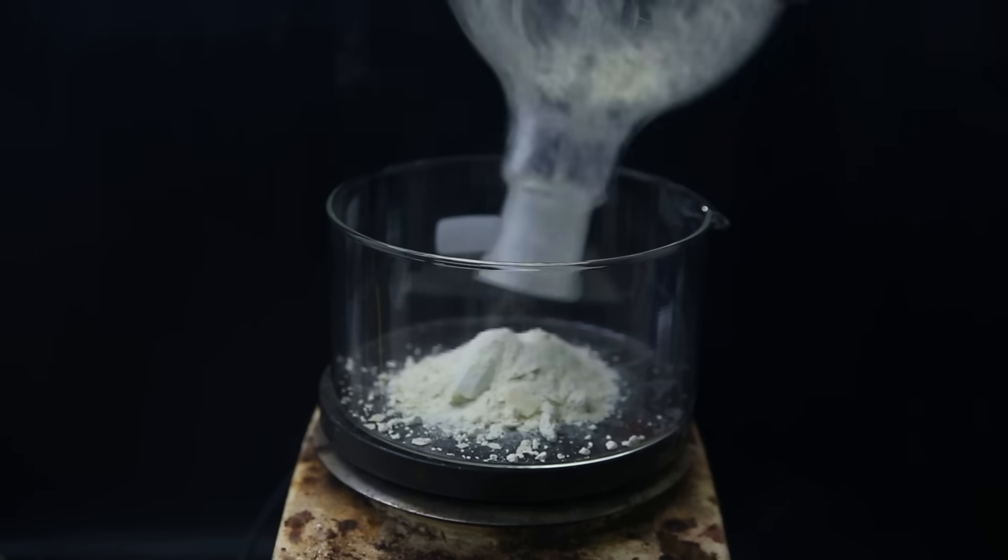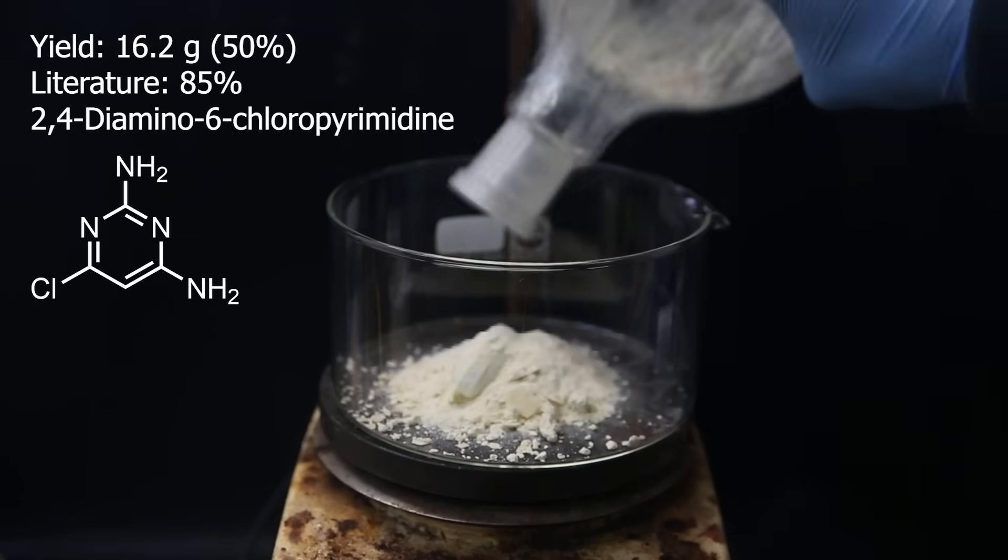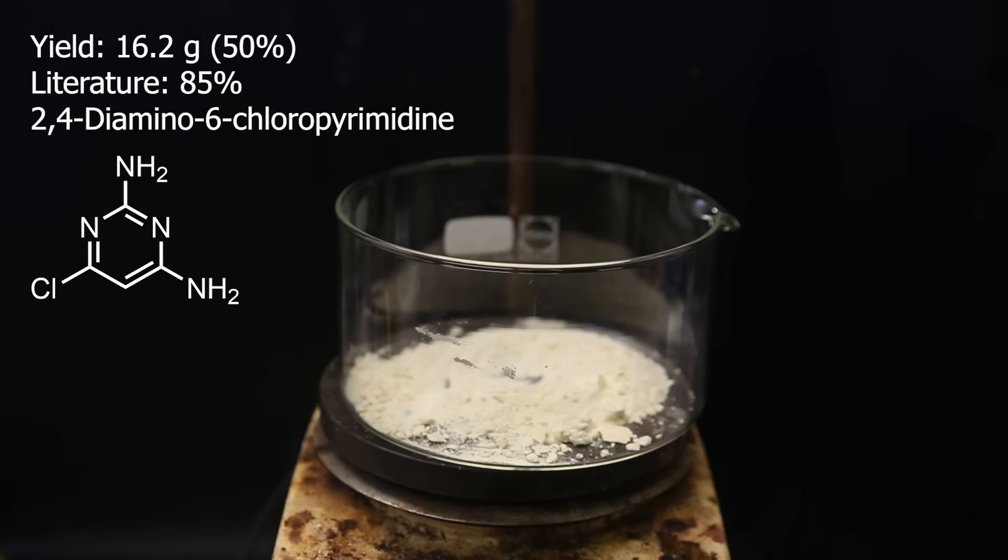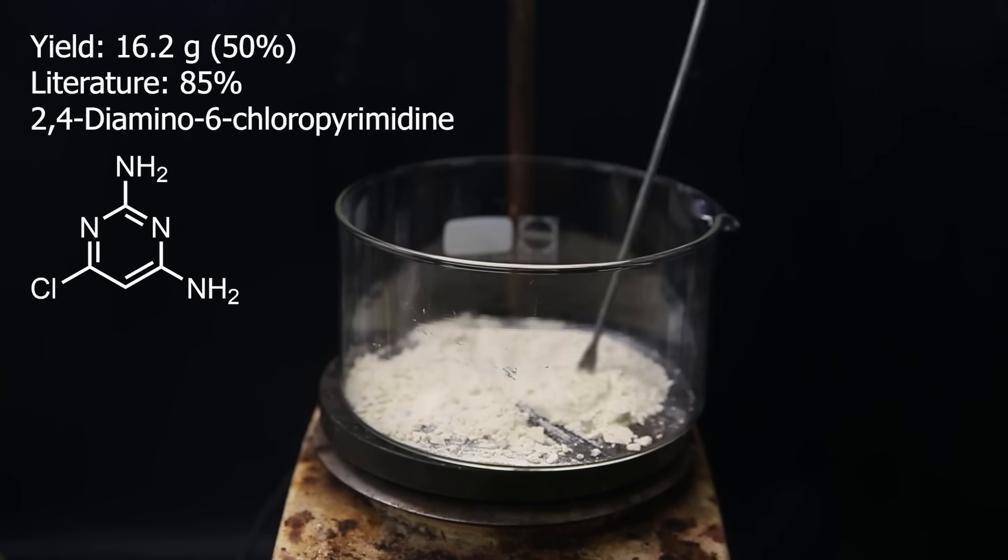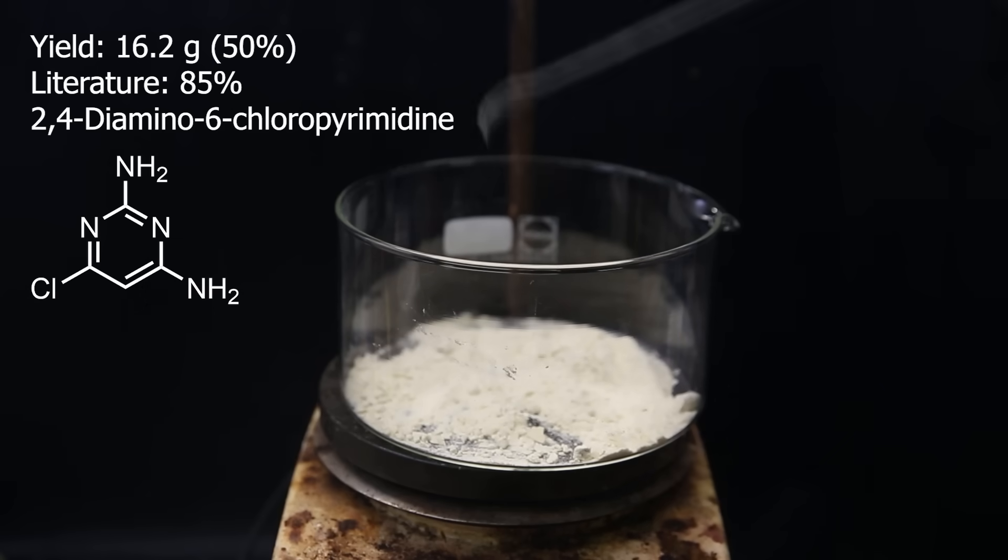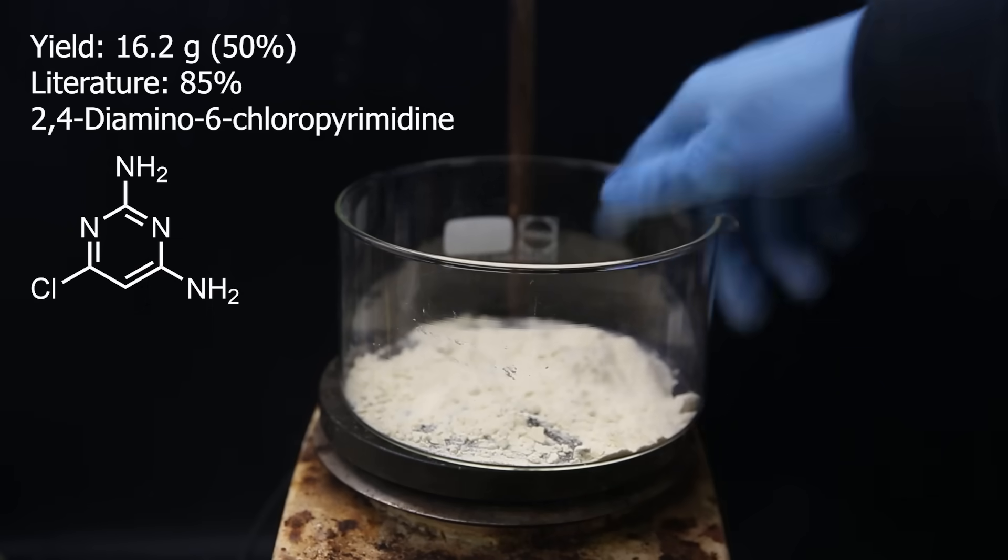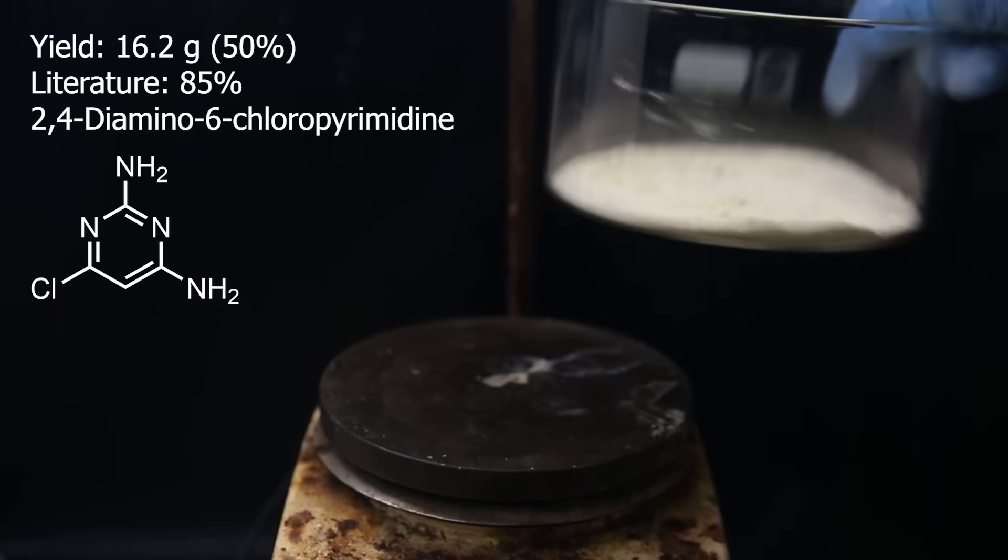I move all of it to a dish and the yield turned out to be 16.2 grams, which is 50% compared to the 85% in literature. Since I used a lot less phosphoryl chloride it is to be expected, and maybe the starting material wasn't of the best quality either. This molecule is also commercially available for way cheaper than what I used to make it, which is why I didn't want to spend too much phosphoryl chloride on it. But I still wanted to do these steps and see what they are like.